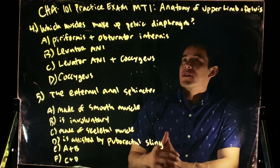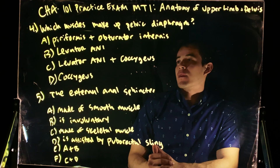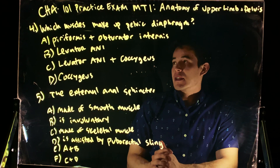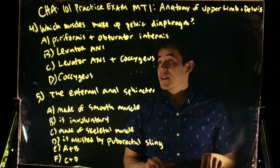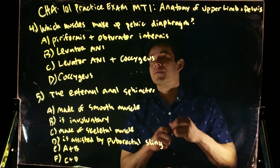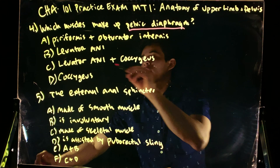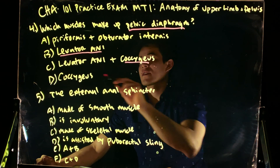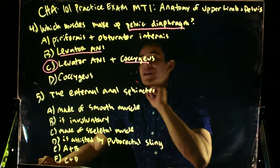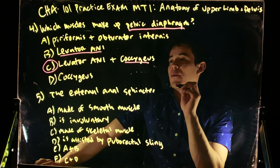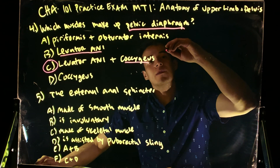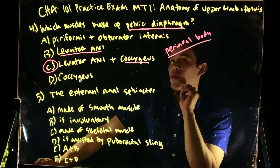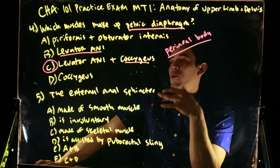Which muscles make up the pelvic diaphragm? The choices include piriformis, obturator internus, levator ani, and coccygeus. The pelvic diaphragm is made up of the levator ani muscles and the coccygeus — that's our answer. The pelvic diaphragm is also supported by the perineal body, which helps support those muscles.